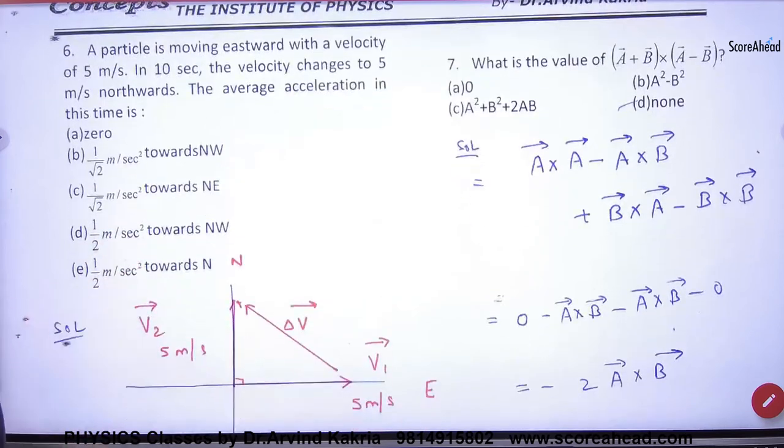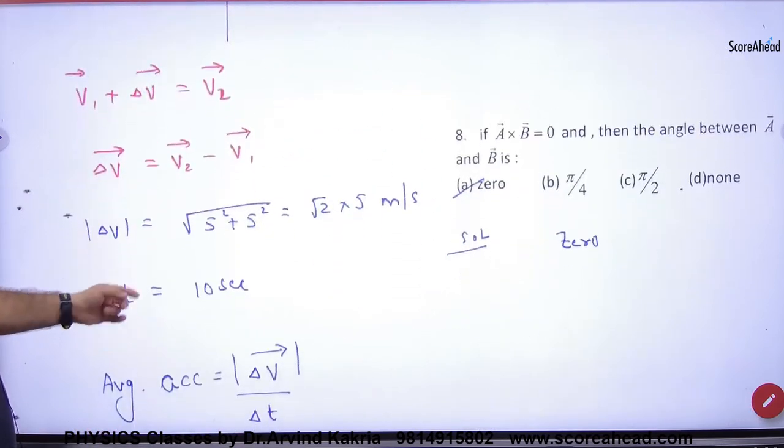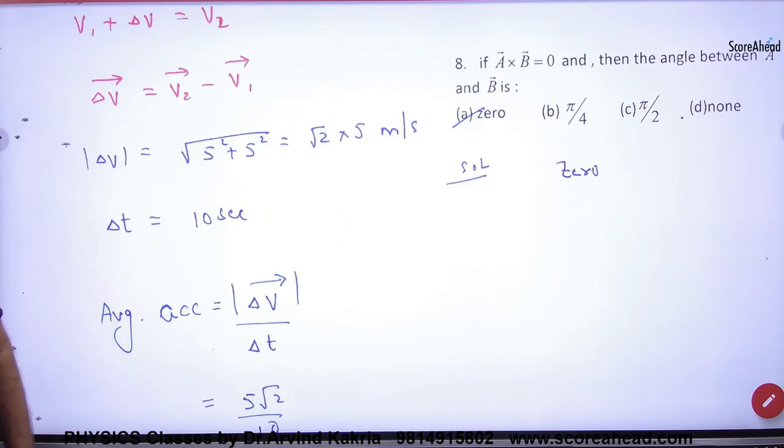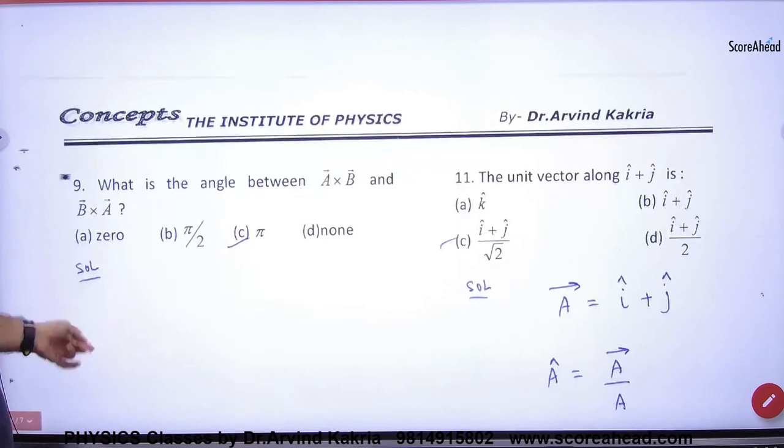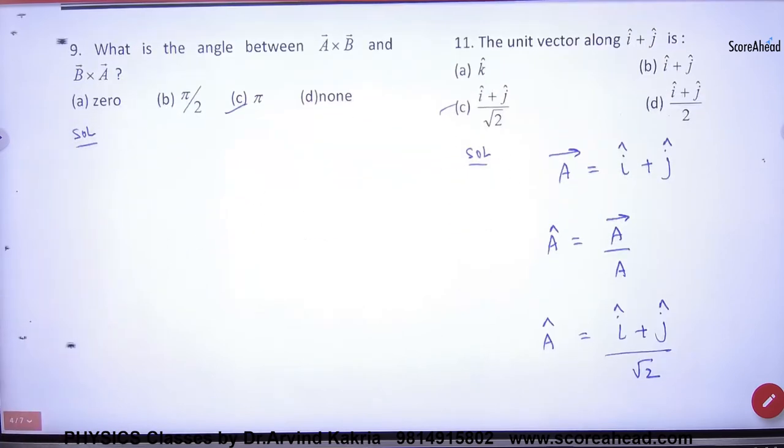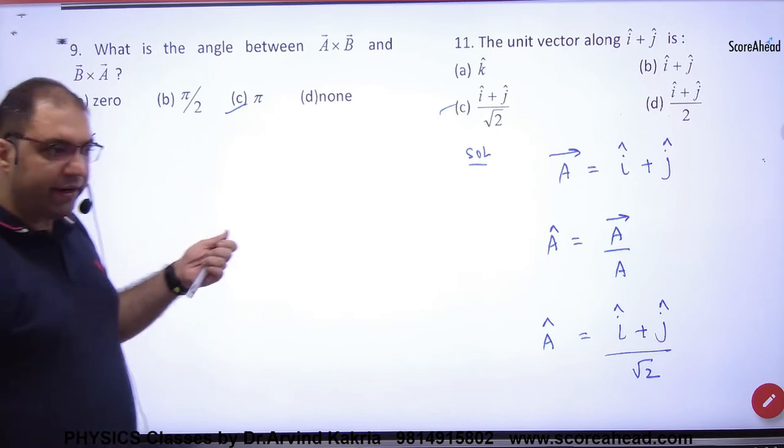Question number 7, question number 8, question number 9. This is simple. A vector and B vector. Here, if you agree that this vector is A vector and B vector, I have taught you something: A vector cross B vector, a new vector will come.